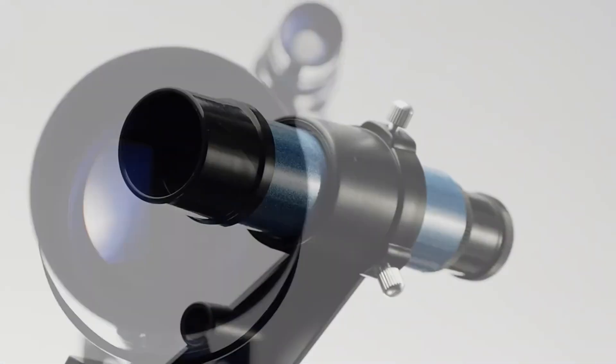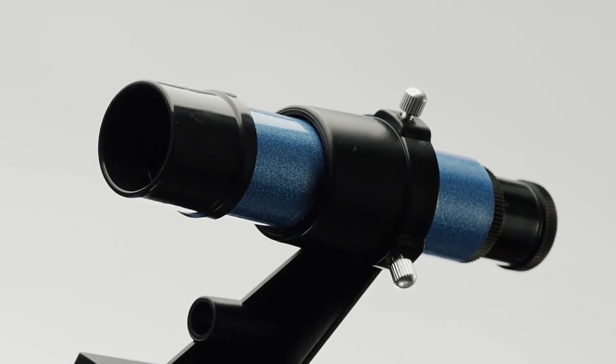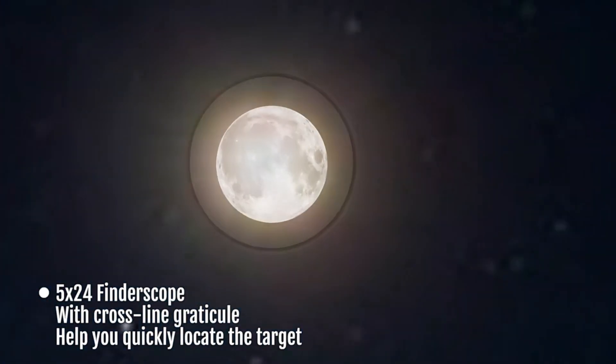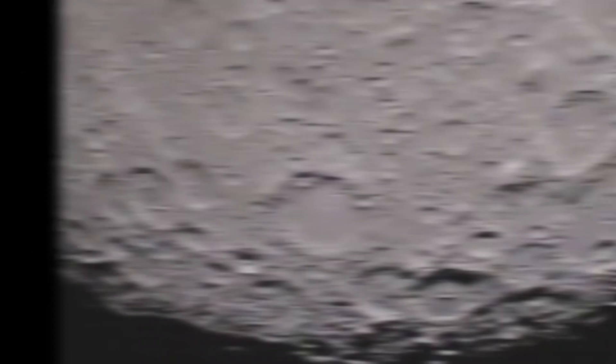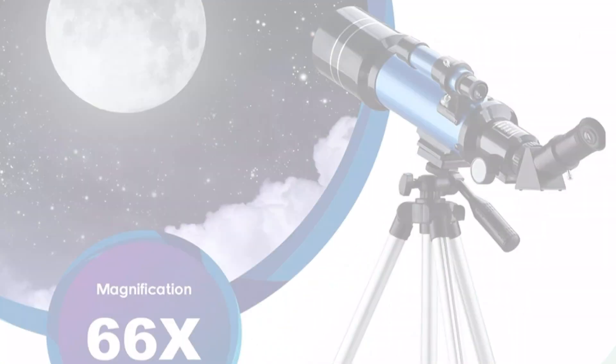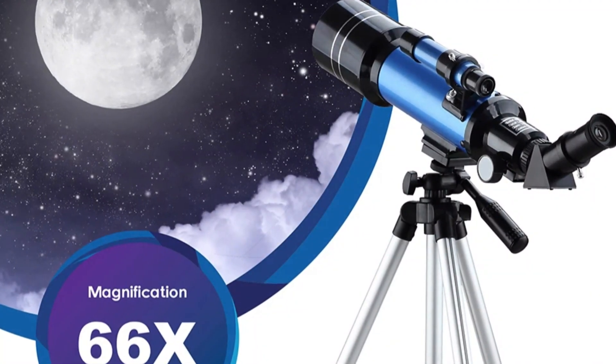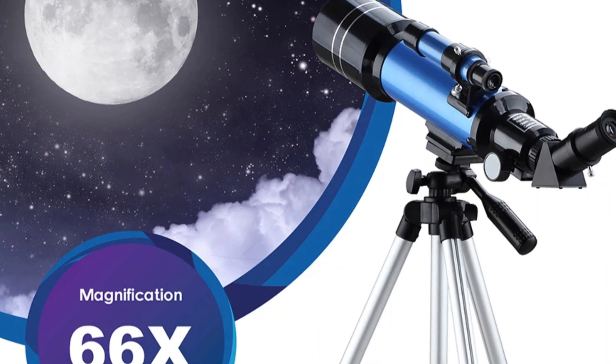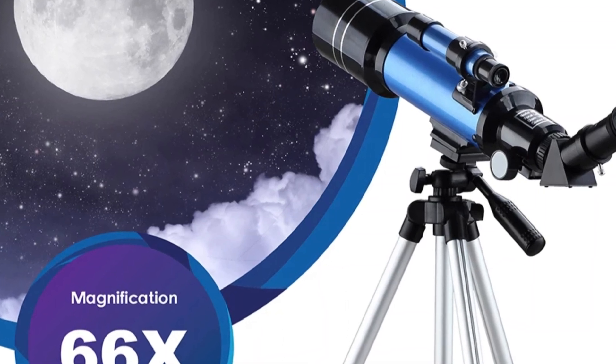The compact design and powerful 70mm lens make it ideal for both beginners and experienced astronomers. The telescope comes with a sturdy tripod adjustable to heights from 41cm to 130cm, providing a stable viewing platform. The user-friendly setup and intuitive controls make it accessible for beginners.